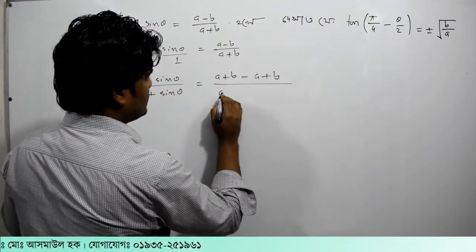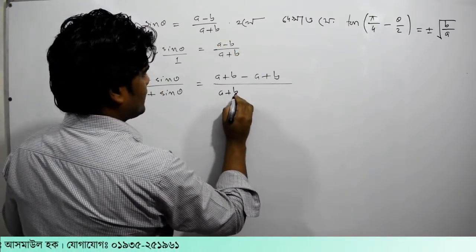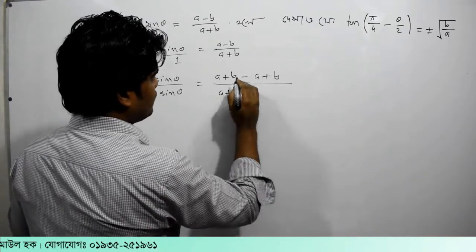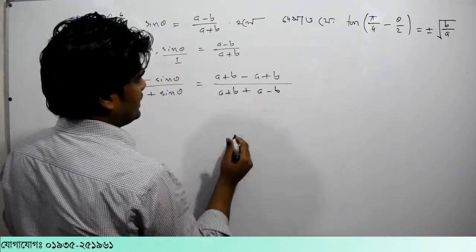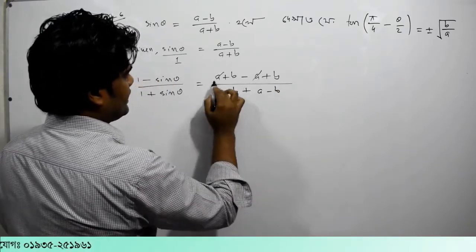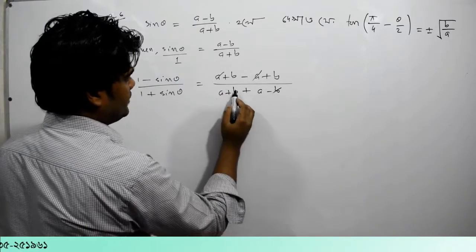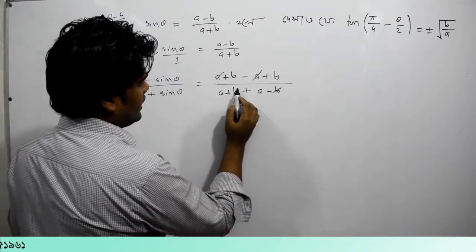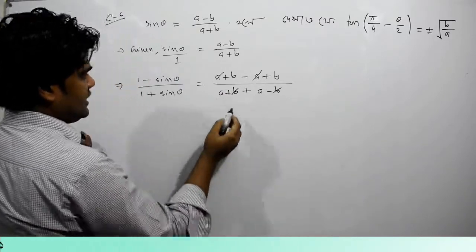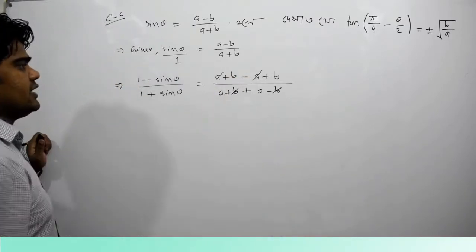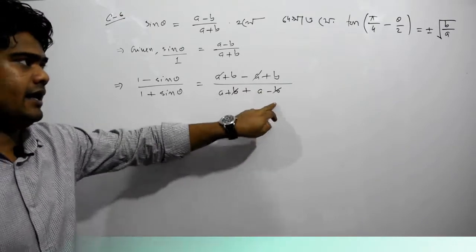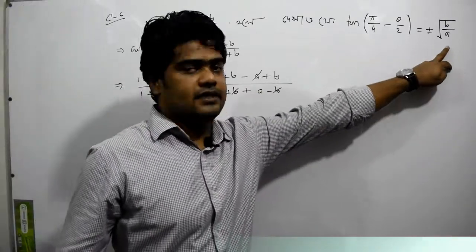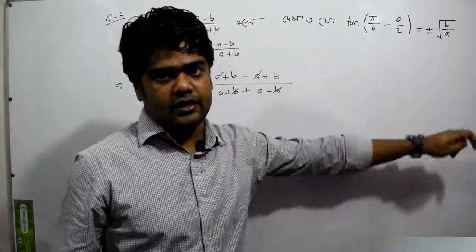So we need to do it. Plus operator: a minus b. Now, a equals 2b and b equals 2a. So b/a equals b by a. We can write a side b by a.